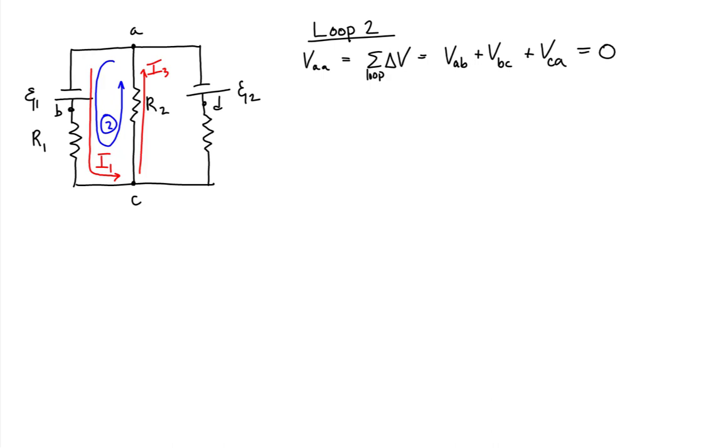From the previous portion, we already know what the potential is from A to B. The potential from A to B is equal to plus the EMF of battery 1. We already know an expression for the potential from B to C. Going through resistor 1, this is equal to minus current 1 times the resistance of resistor 1, which is equal to minus 2I1R.